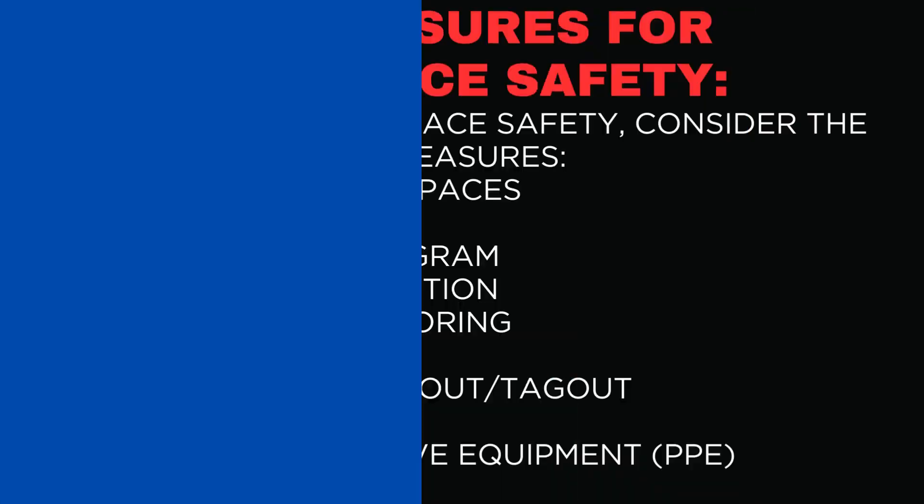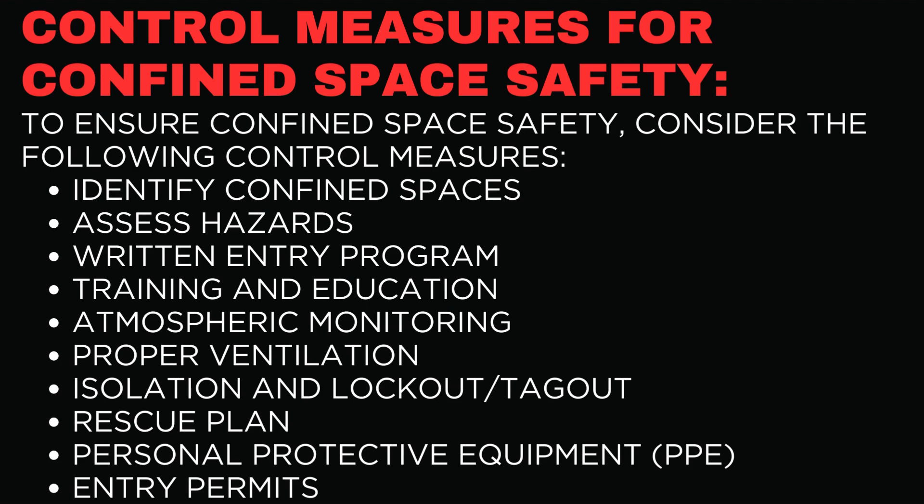To ensure confined space safety, consider the following control measures: identify all confined spaces in the workplace and label them accordingly; conduct a thorough hazard assessment before entering any confined space; develop and implement a written confined space entry program; provide proper training to workers on confined space hazards and procedures; continuously monitor the atmosphere before and during entry for oxygen levels, flammability, and toxicity; ensure proper ventilation to maintain safe atmospheric conditions; isolate and lockout/tagout equipment to prevent accidental activation during entry; and establish a rescue plan with trained personnel and appropriate equipment on standby.